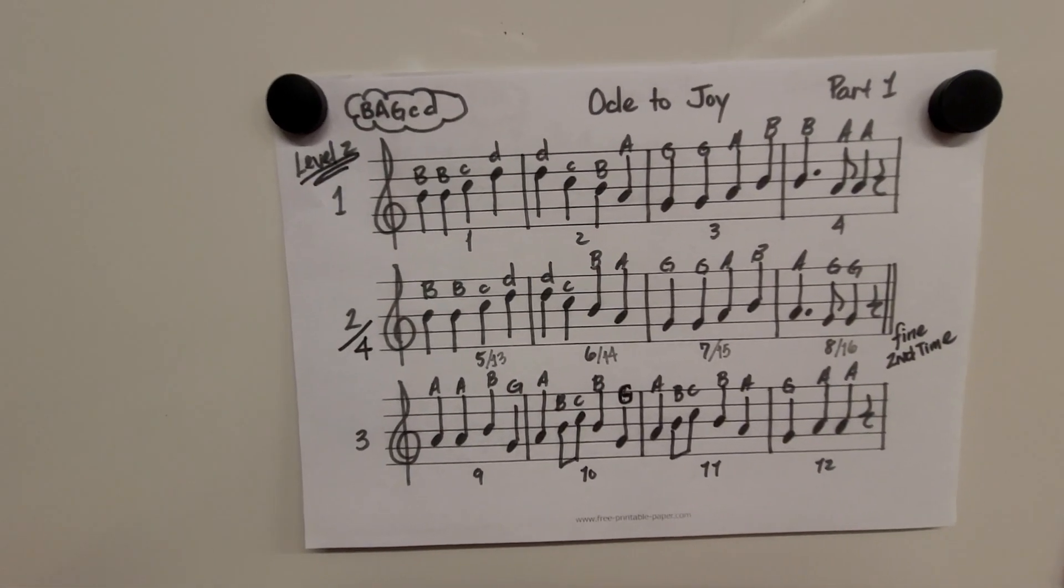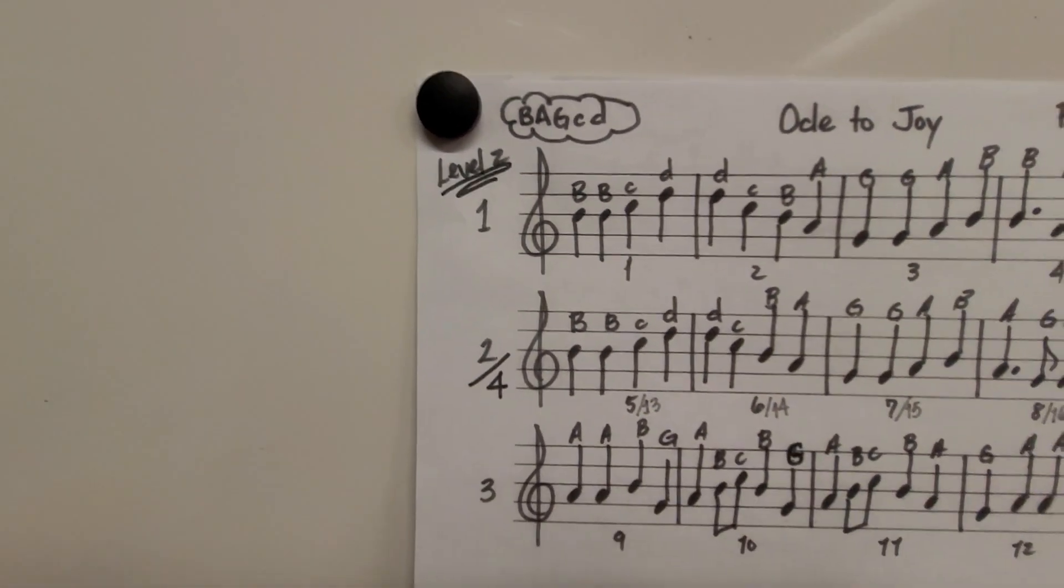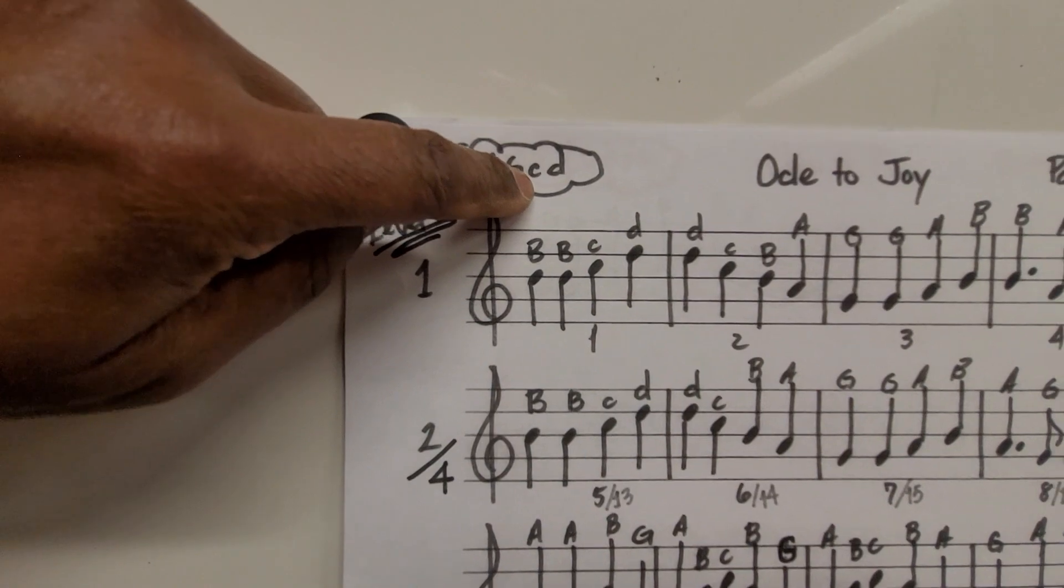Ode to Joy, Part 1. It's Level 2. What notes do we need to know? We need to know B, A, G, High C, and High D.